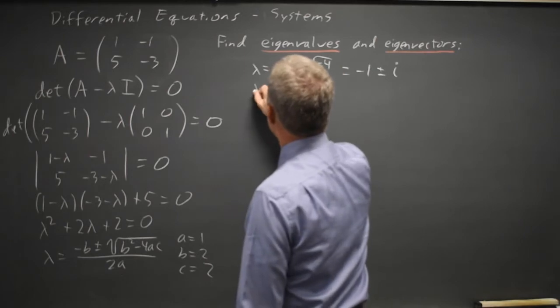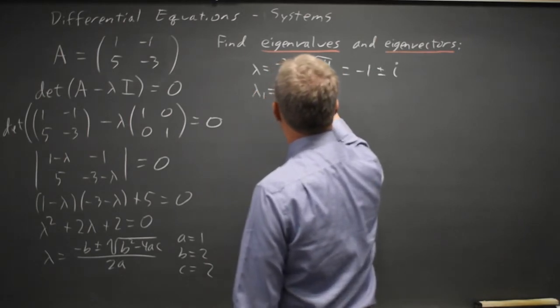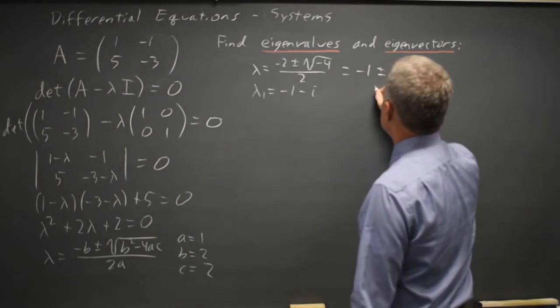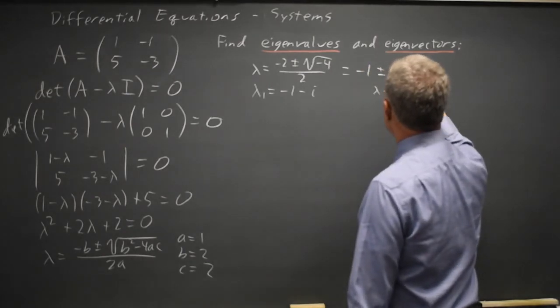So lambda 1 equals negative 1 minus i, and lambda 2 equals negative 1 plus i.